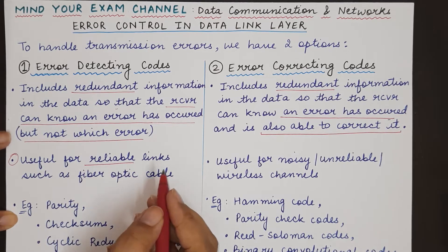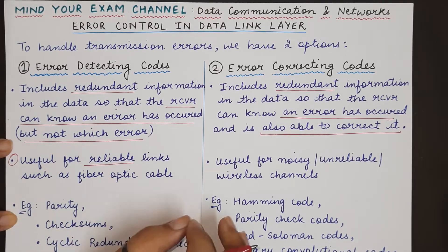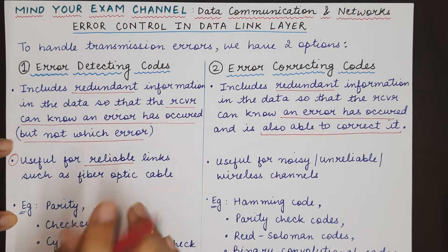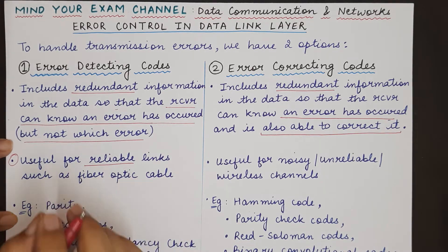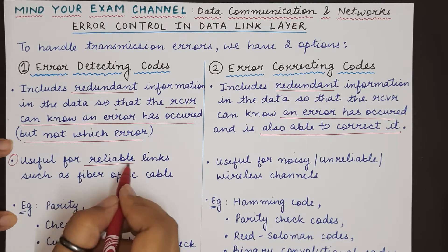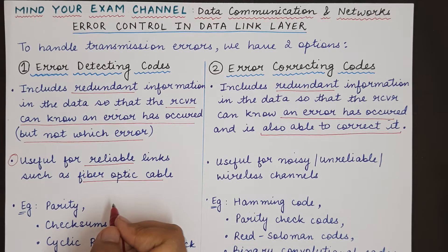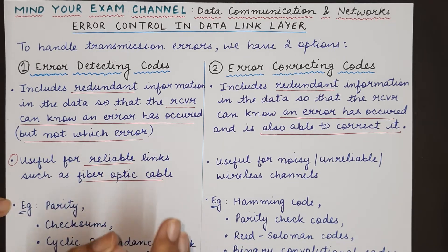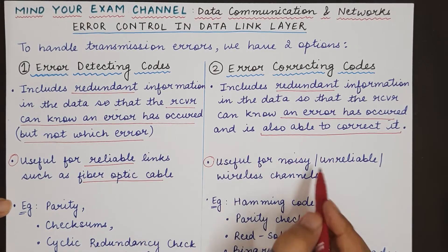Error detecting codes are useful over reliable channels — channels which do not have noise, where even an infrequent error occurs rarely. If an error occurs, the data can be resent, and the retransmission in most cases will be correct. That is why error detection codes are used over reliable channels like fiber optic cables, because if a rare error occurs and the receiver asks the sender to retransmit, the retransmission will mostly be correct since it is a reliable channel.